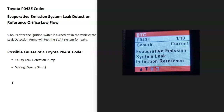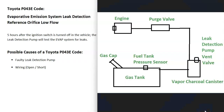Modern vehicles have what's called an EVAP system that basically takes all the gas vapors from the gas tank and feeds them back up to the engine to get burned off. The onboard computer is seeing a problem with this, mainly with the leak detection pump, so it's going to have to be troubleshot to find out why.